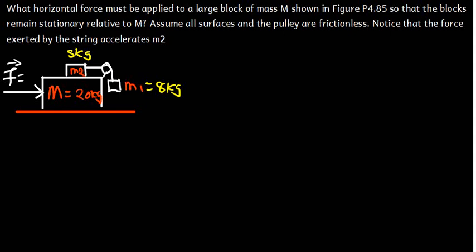So in this video, we want to see how we can solve this interesting question here, which is saying: what horizontal force must be applied to a large block of mass M shown in the figure below, so that the blocks remain stationary relative to M? Assume all surfaces and the pulley are frictionless. Notice that the force exerted by the string accelerates M2.